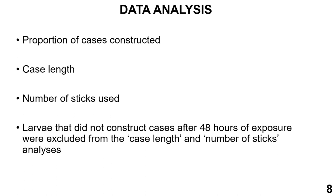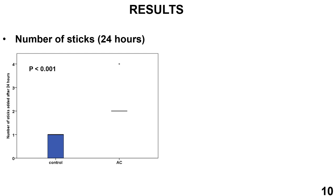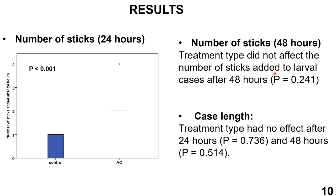To analyze the data, we recorded the proportion of cases constructed, larval case length, and number of sticks used after 24 and 48 hours of case construction. Larvae that did not construct new cases after 48 hours were excluded from the case length and number of sticks analysis. Results showed that the type of treatment received does not affect larvae case construction rate — they all constructed at the same rate after 24 and 48 hours. However, treatment did affect case material selection: larvae in the alarm cue group added more sticks to their cases at 24 hours, though there was no difference at 48 hours. Case length was also unaffected by treatment.